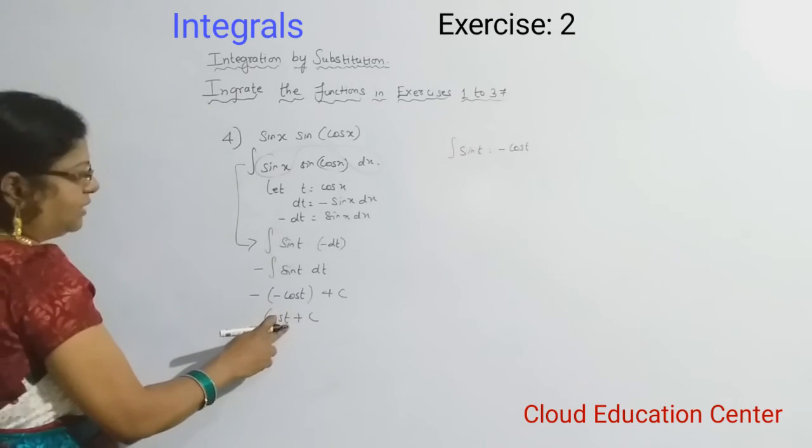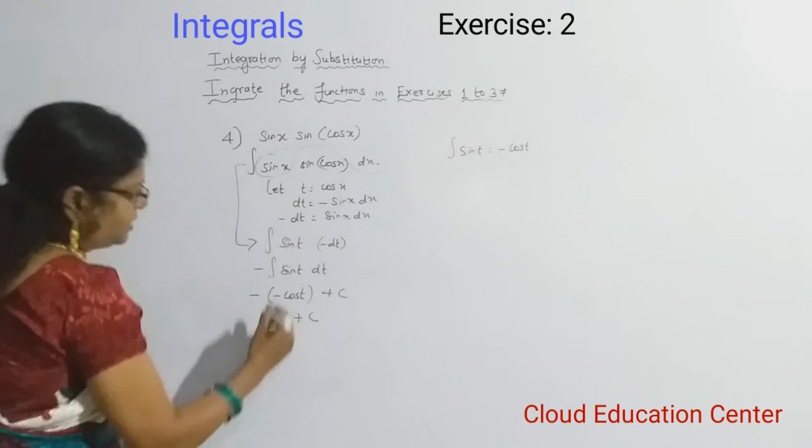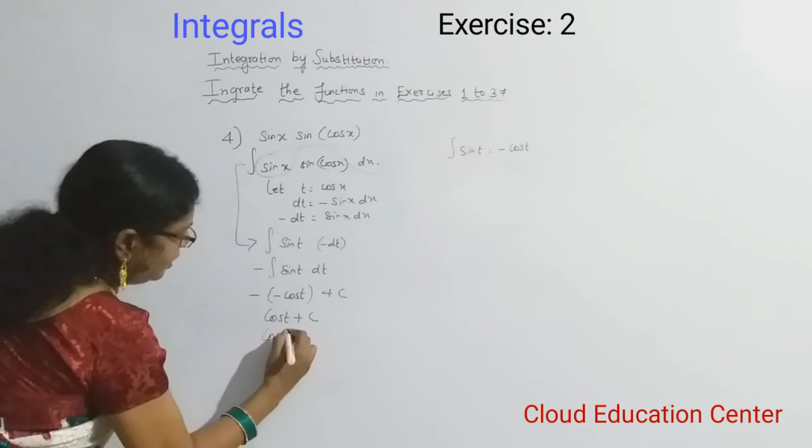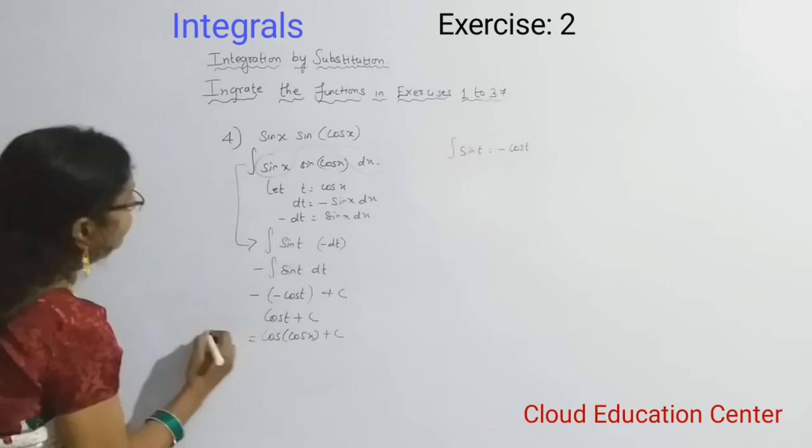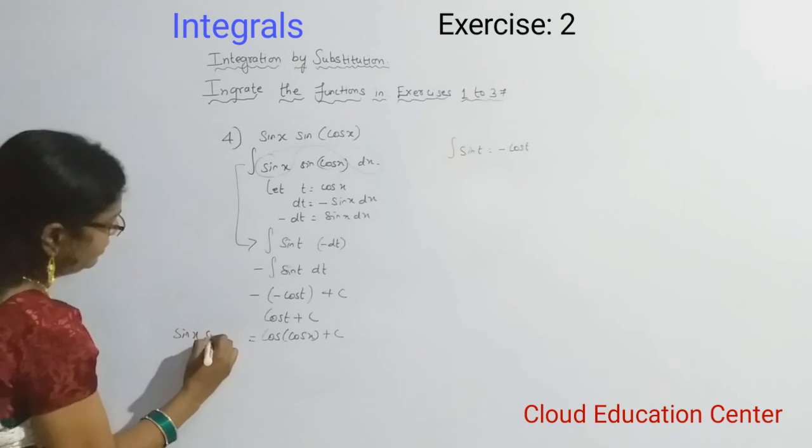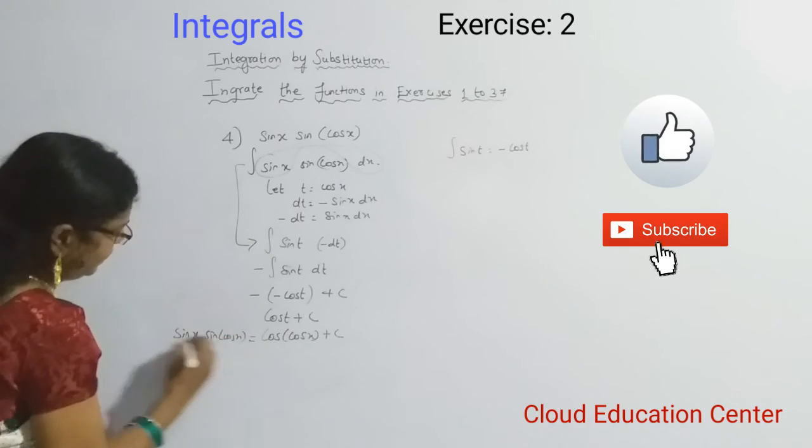So here the cos of t, that is a new variable. So what is t actually? Cos x. So we will get the value cos of cos x plus c. This is the value for sin x sin of cos x.